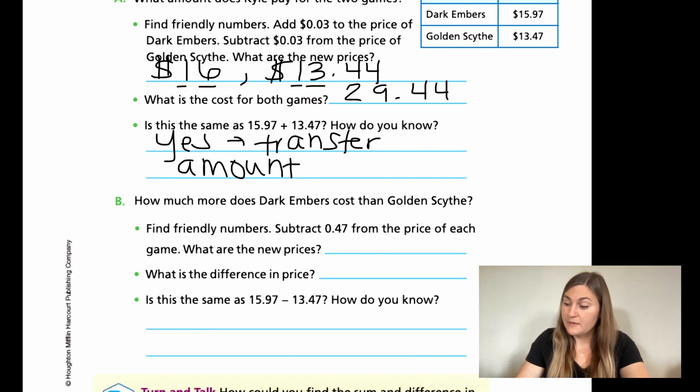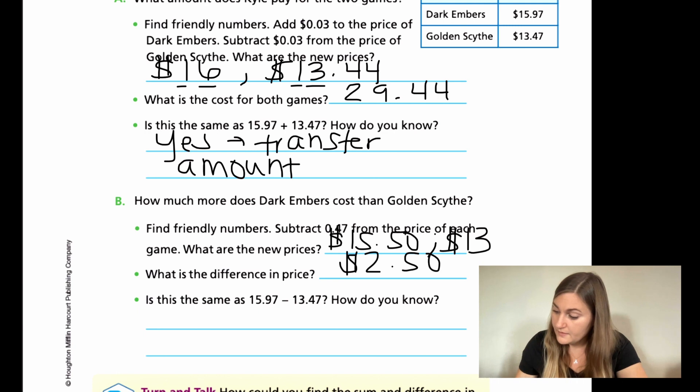So for B, how much more does Dark Embers cost than the Golden Scythe? So find friendly numbers, subtract $0.47 from the price of each. The reason we're subtracting $0.47 from each is because for the second one, it'll make it an even 13. And it just so happens that if I subtract $0.47 from the first one, it'll give me an even 50 cents. So what are the new prices? This is going to be $15.50 and an even $13. So what is the difference in price? So if I was going to be subtracting, I would do $15.50 minus 13. So if I take 13 away from 15, I just have $2. So that's going to be $2.50. Is this the same as the originals? It's going to be the same answers before. We're just saying yes, because we are just decreasing equally.